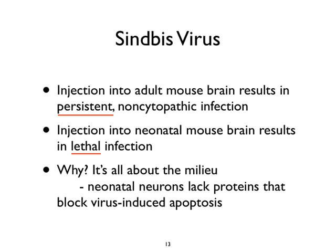Consider Sindbis virus — an RNA virus. When injected into an adult mouse brain, you get a persistent noncytopathic infection: the mouse lives, the virus replicates at low levels, and they are sort of symbiotes. But if you take the same virus and inject it into a neonatal mouse brain, you get a lethal infection — the virus replicates, overwhelms the host, and the host dies. The difference is the milieu: neonatal neurons lack proteins that block virus-induced apoptosis. Block apoptosis and you can keep things down on the farm.